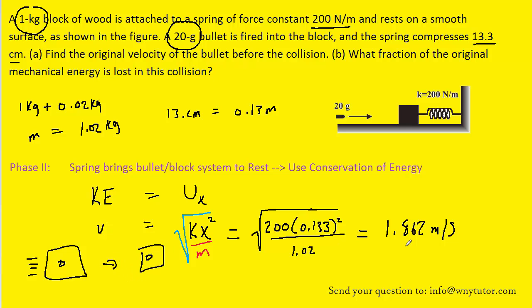Now here's the key idea. This is the initial velocity of the bullet and the block right after the collision, but it's going to become the final velocity in phase 1 of the question. So let's turn back to phase 1.